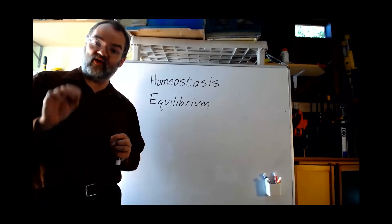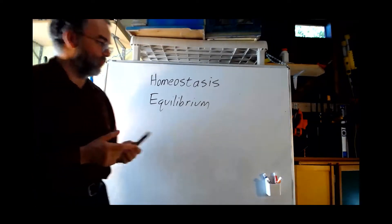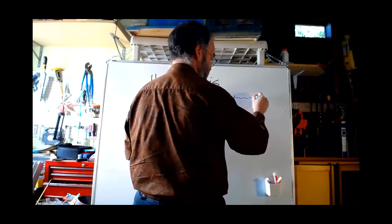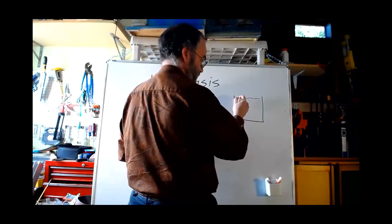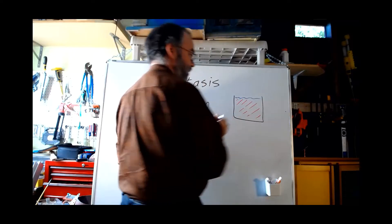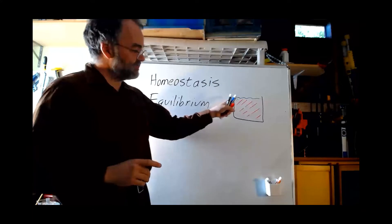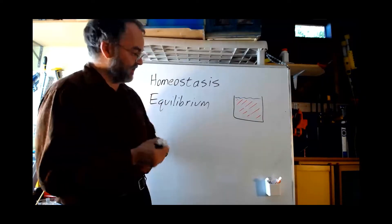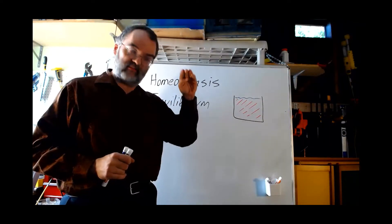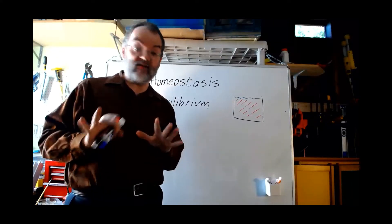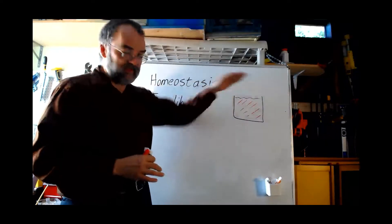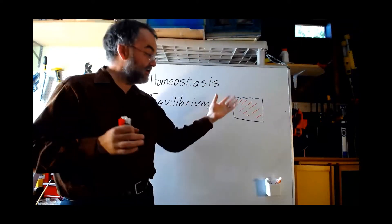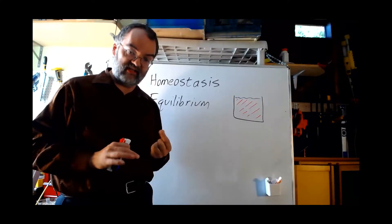At equilibrium, things are not changing and no energy is required to keep them that way. For example, if I have a beaker of water and put some red dye in it, and that dye spreads out equally so the whole thing is tinted red, then the concentration of that dye at any location is at equilibrium — it won't change very much, and I don't have to do anything to keep it that way. If I sealed that up and came back in 100 years, it would still be spread equally through the water. That's equilibrium.